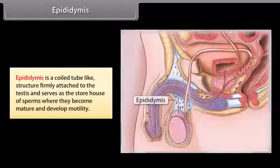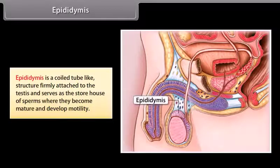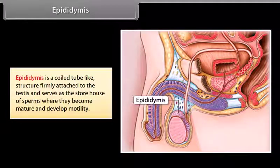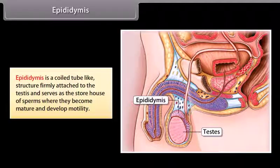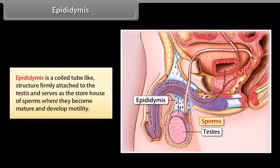The epididymis is a coiled tube-like structure firmly attached to the testes. It serves as the storehouse of sperms, where they become mature and develop motility.